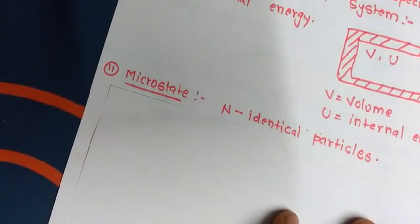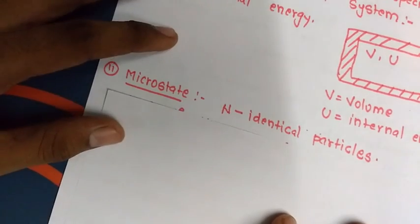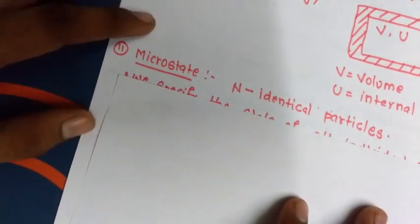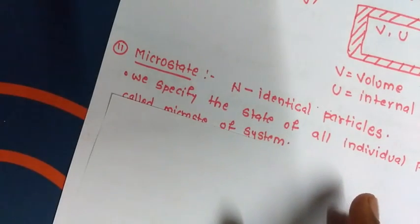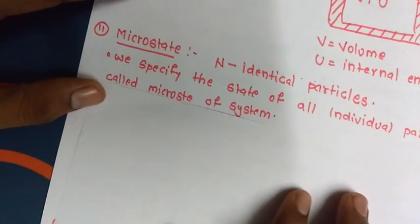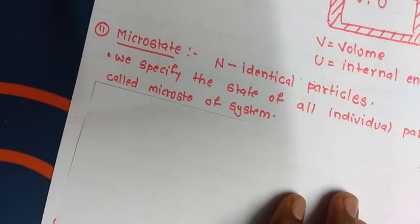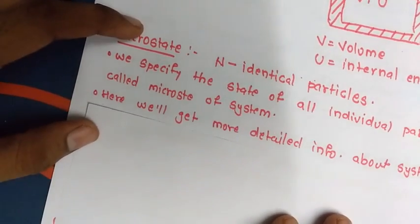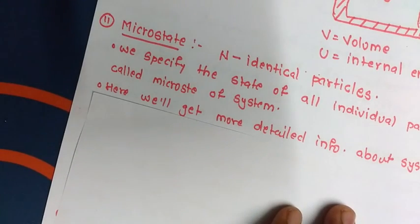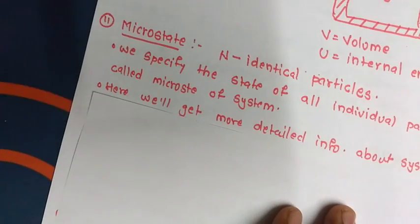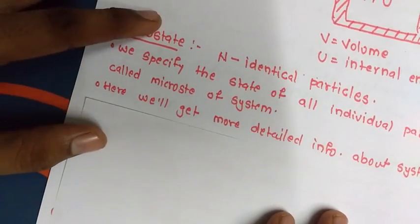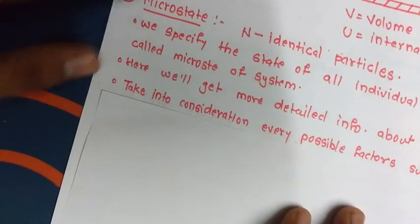Now let's talk about the microstate. Since we know a system consists of N number of identical particles, when we specify the state of all individual particles, it provides us the microstate of the system. Because we specify the detail of each particle, we will get more information about any system as compared to the macrostate.